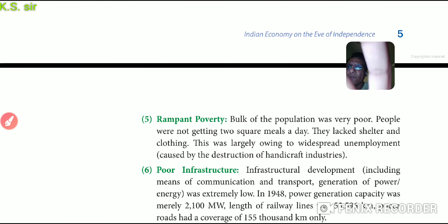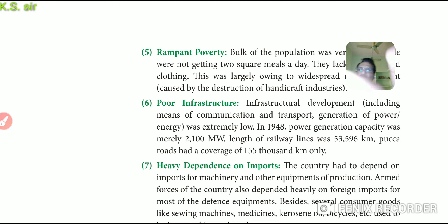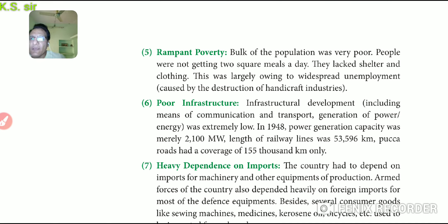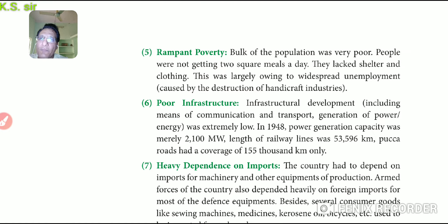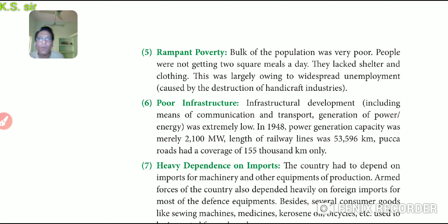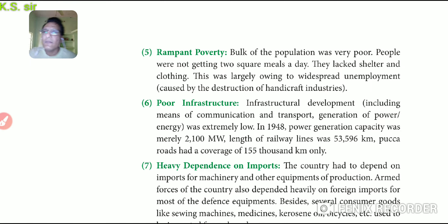The fifth feature was rampant poverty. The bulk of the population was very poor — people were not getting two square meals a day and lacked shelter and clothing. This was largely owing to widespread unemployment caused by the destruction of handicraft industries by the British.